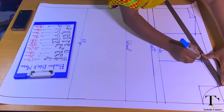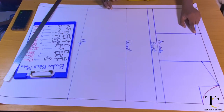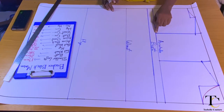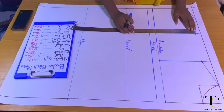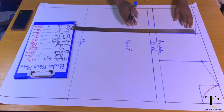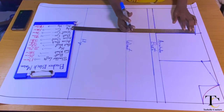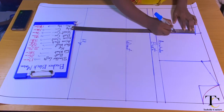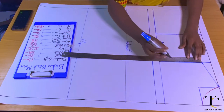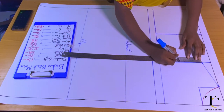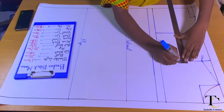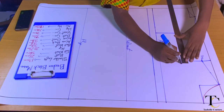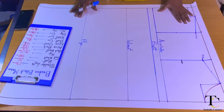The next thing is to find the midpoint between my shoulder point line and my armhole line. Find the midpoint and mark both of the midpoint lines. For the front midpoint line, you go in by 1.5 centimeters — this is all that you need to do.